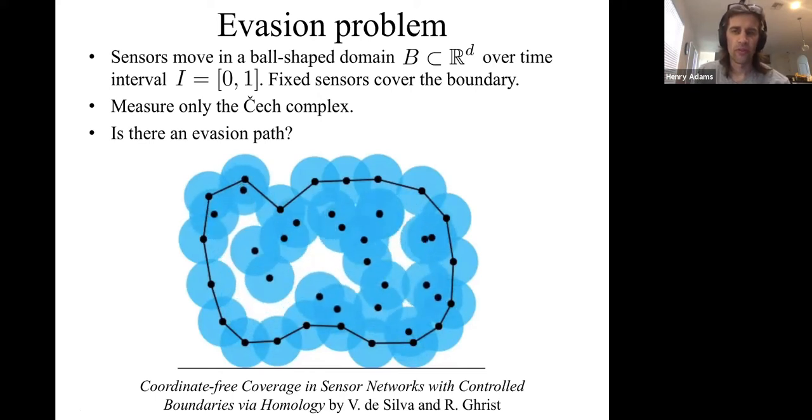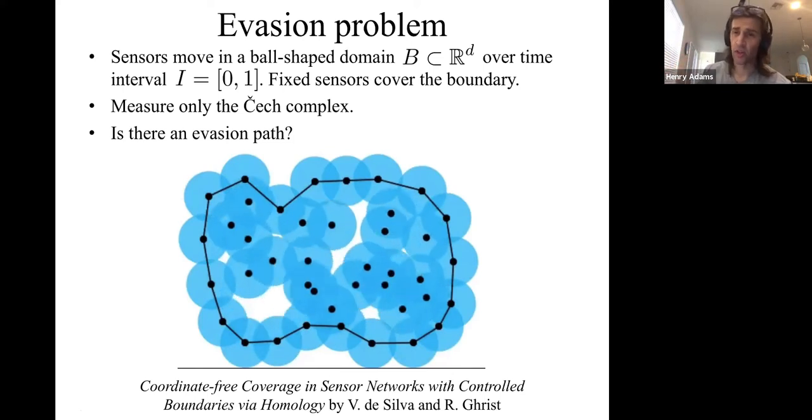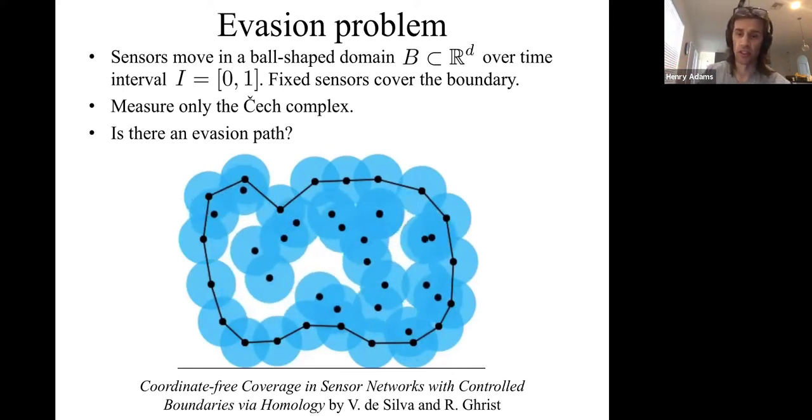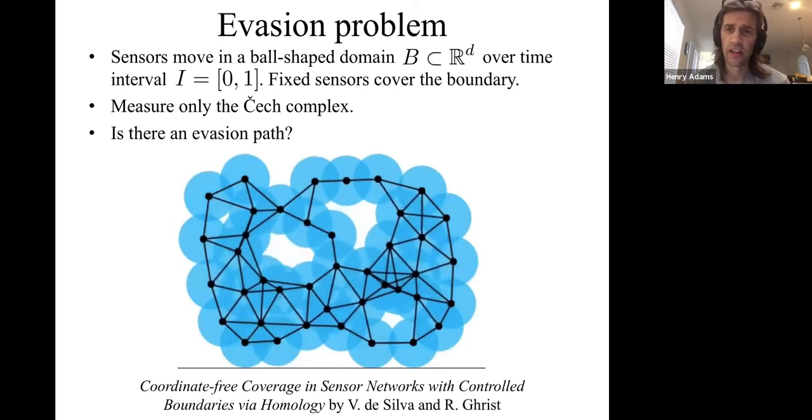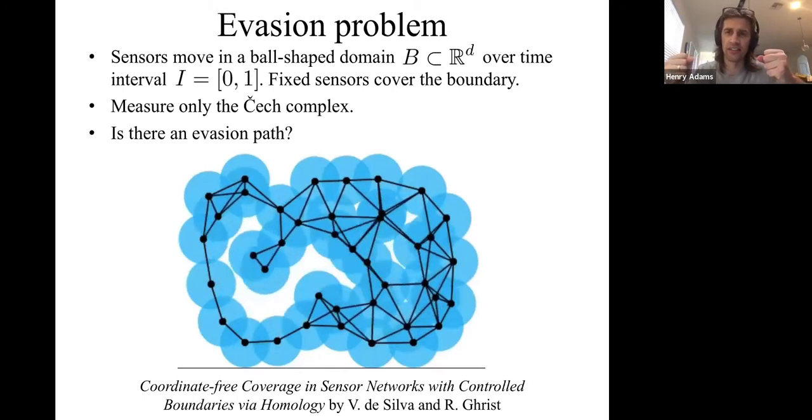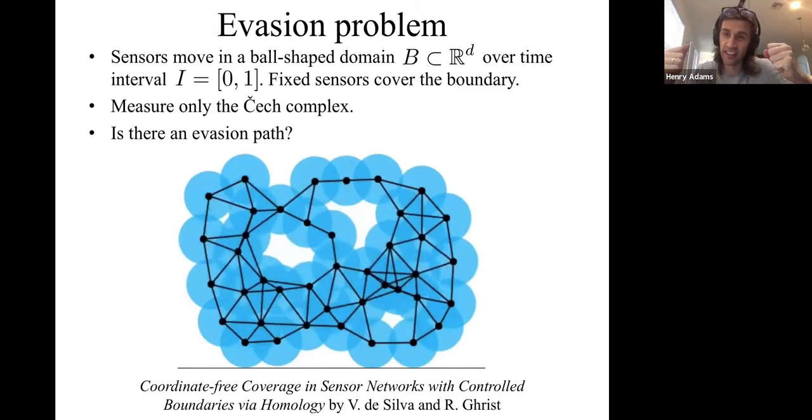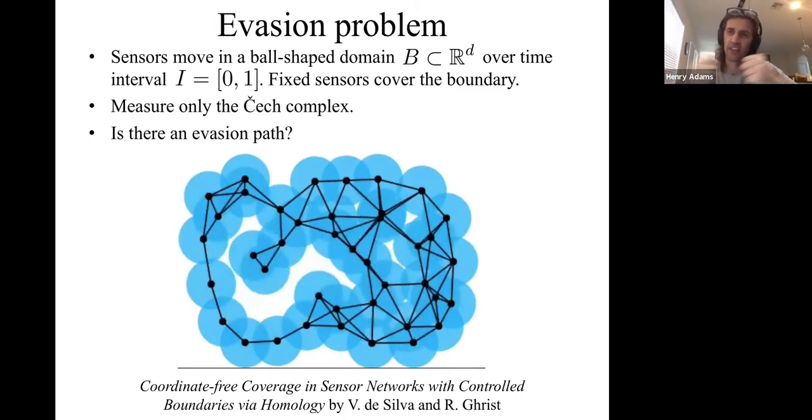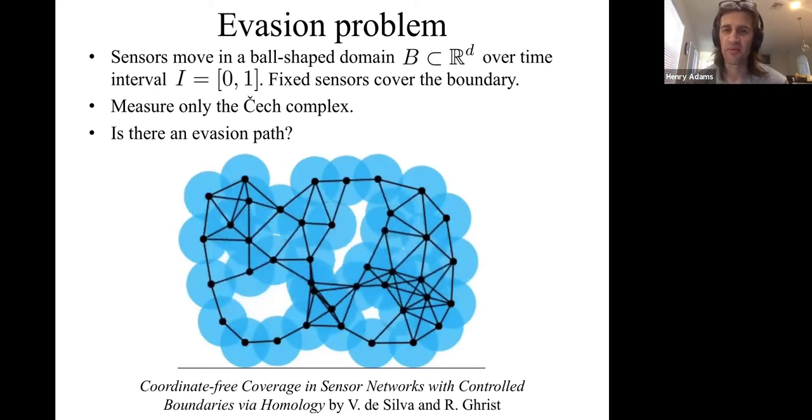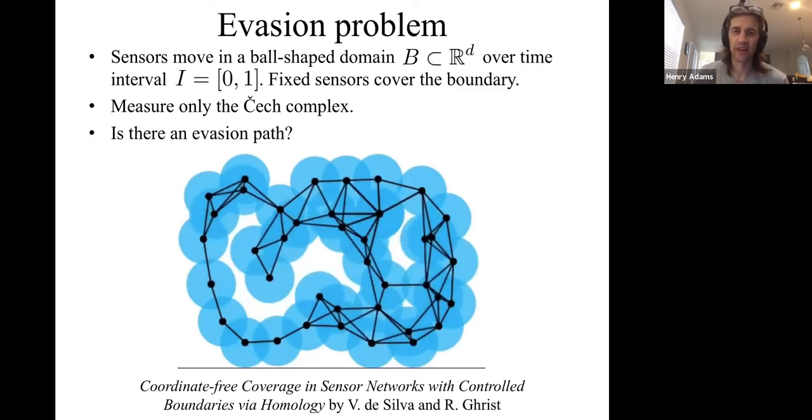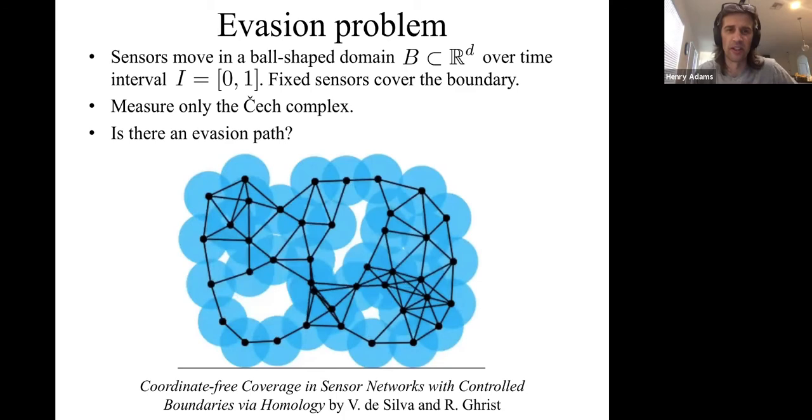This is going to be a minimal sensing problem. These sensors don't know their locations. They don't have GPS coordinates. All they instead measure is connectivity data. Think of sensors as walkie-talkies. When the walkie-talkies are close enough, they can communicate, and so they just measure this edge. Whenever two sensors overlap, we have an edge between them. And when sensors don't overlap, we don't have an edge between them.